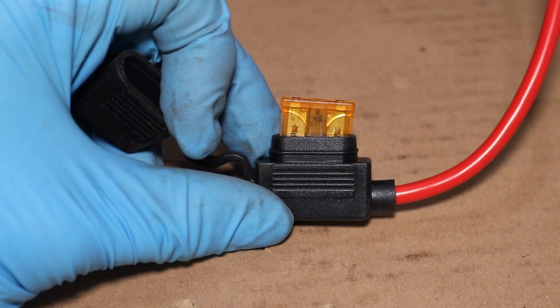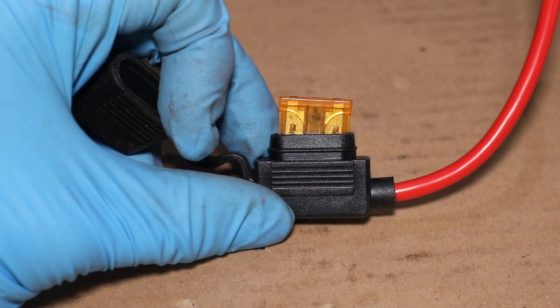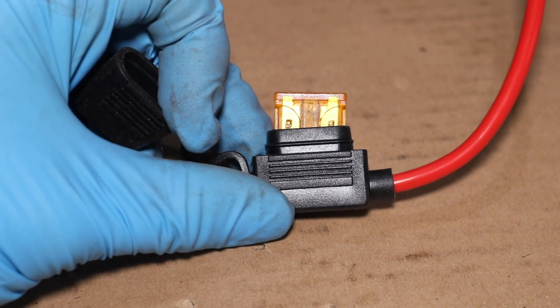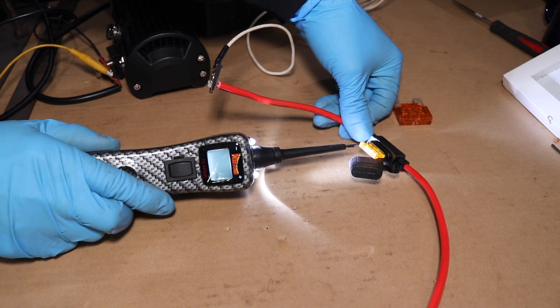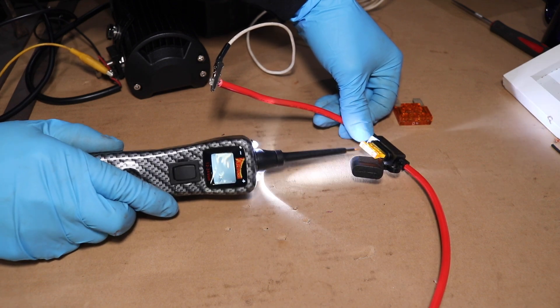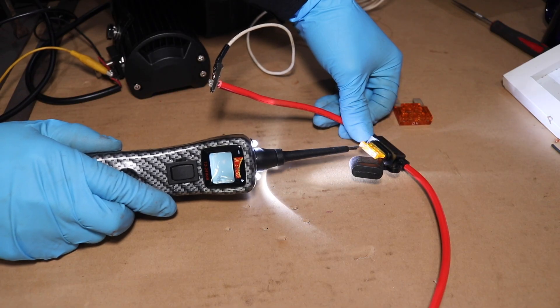You can see this fuse is clearly blown, but we can confirm that with our power probe. Let's break out the power probe. We can take the tip of our power probe and probe into the fuse. First we're going to start on the blade that corresponds to the battery supply side of the fuse.